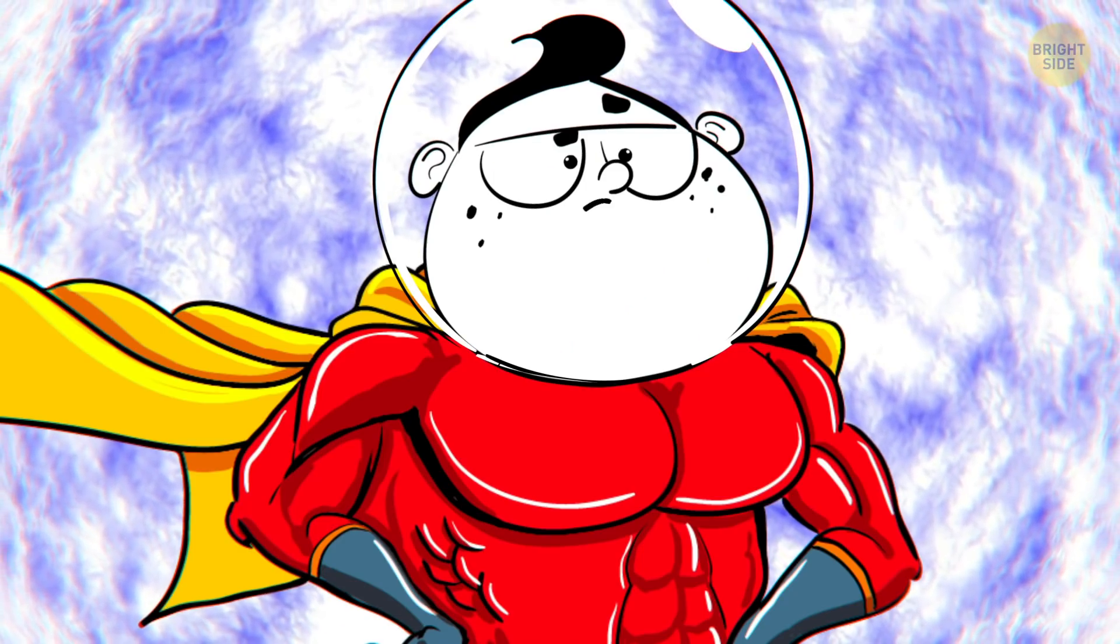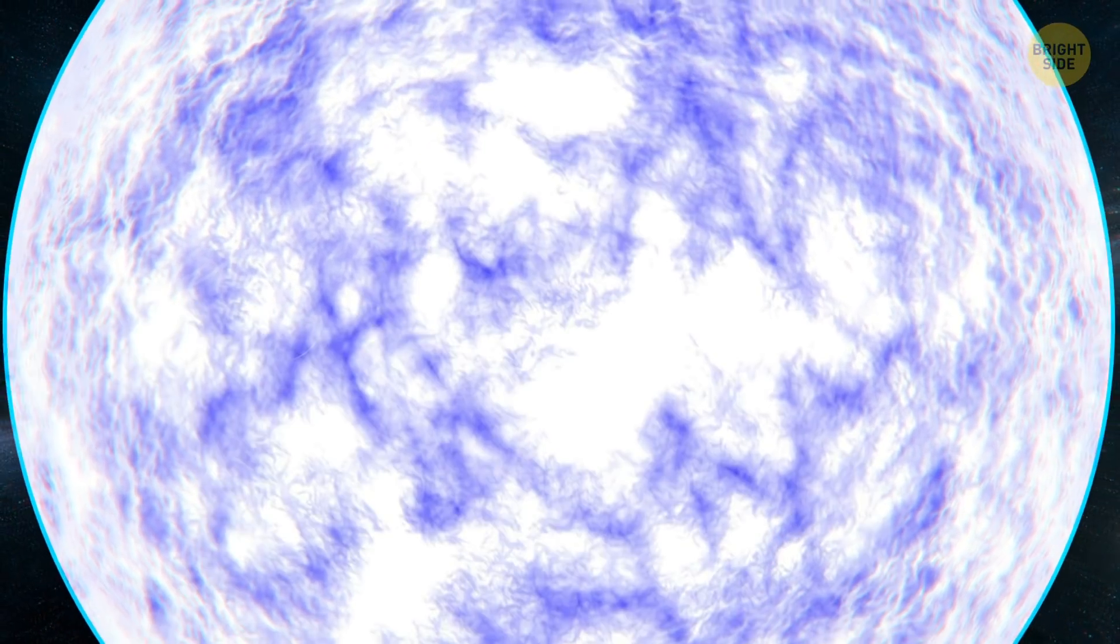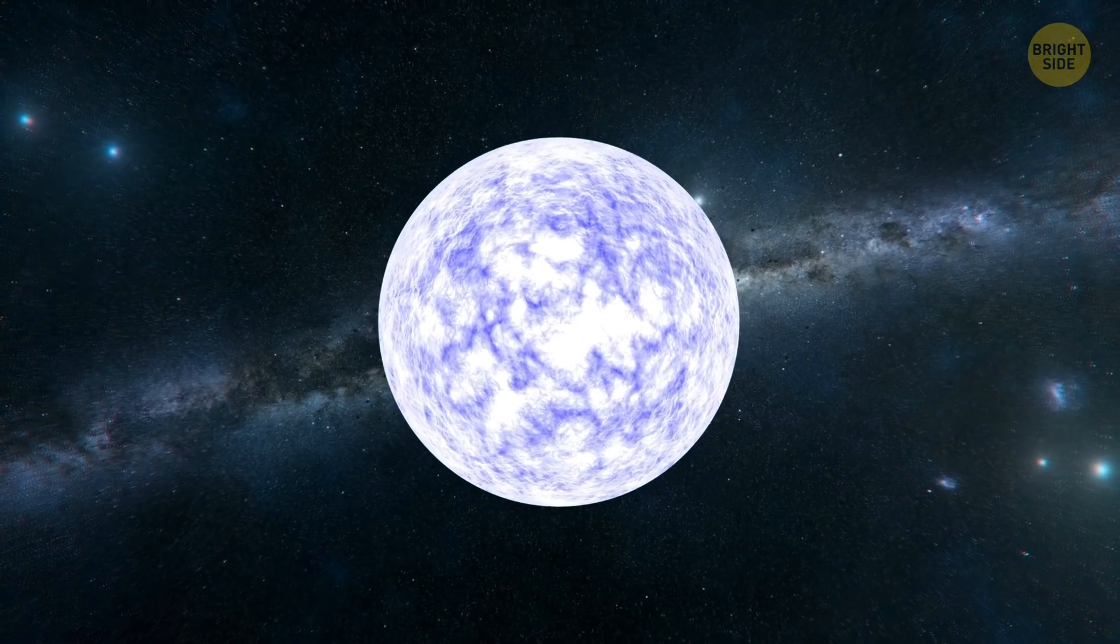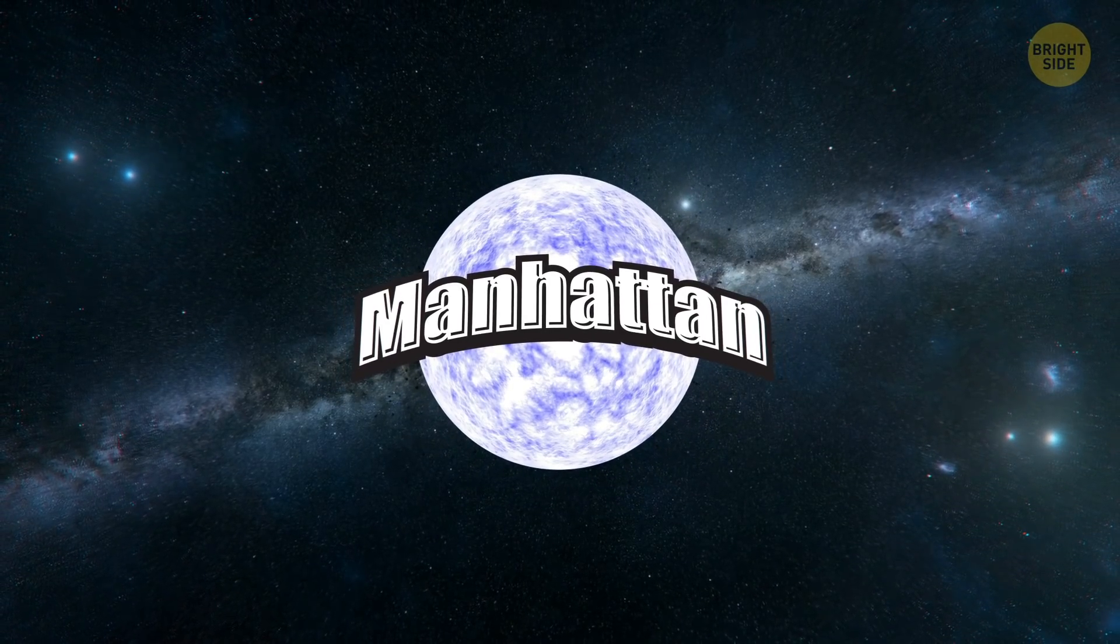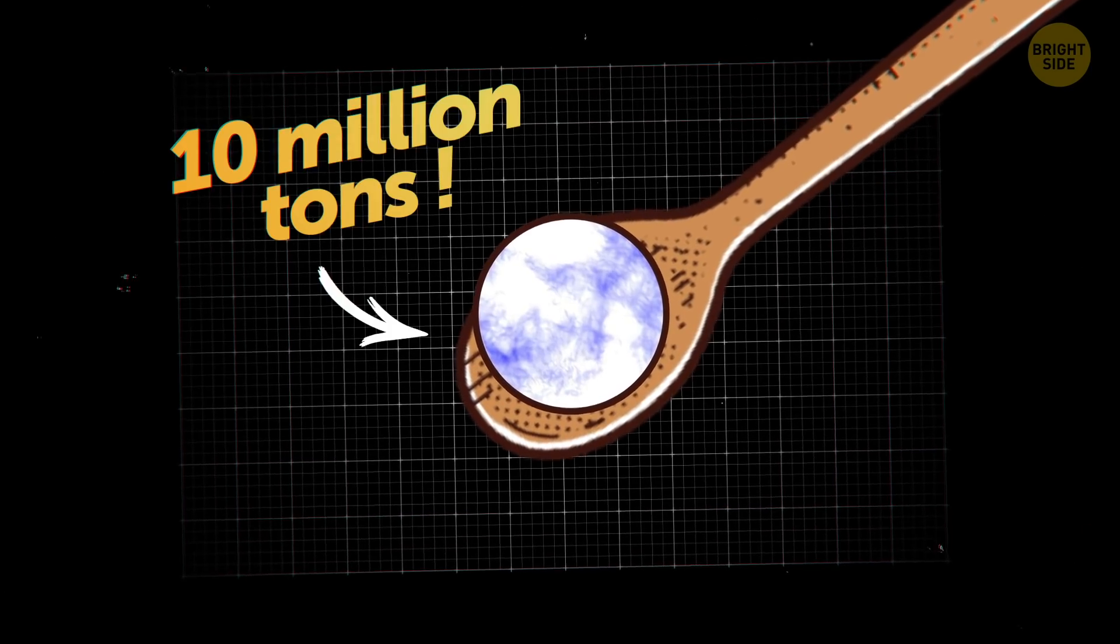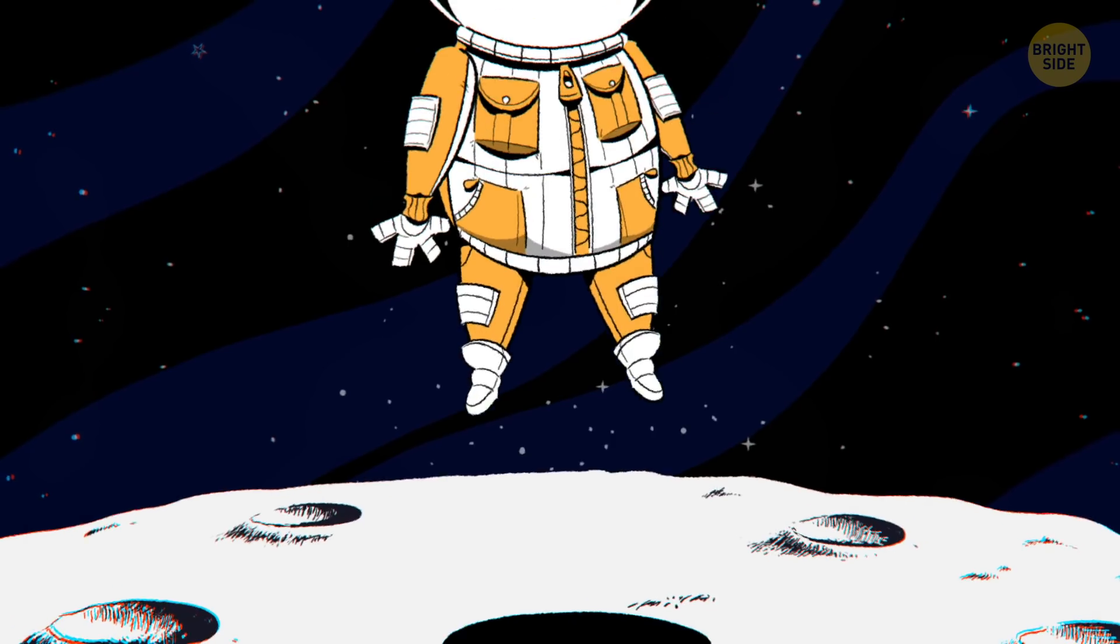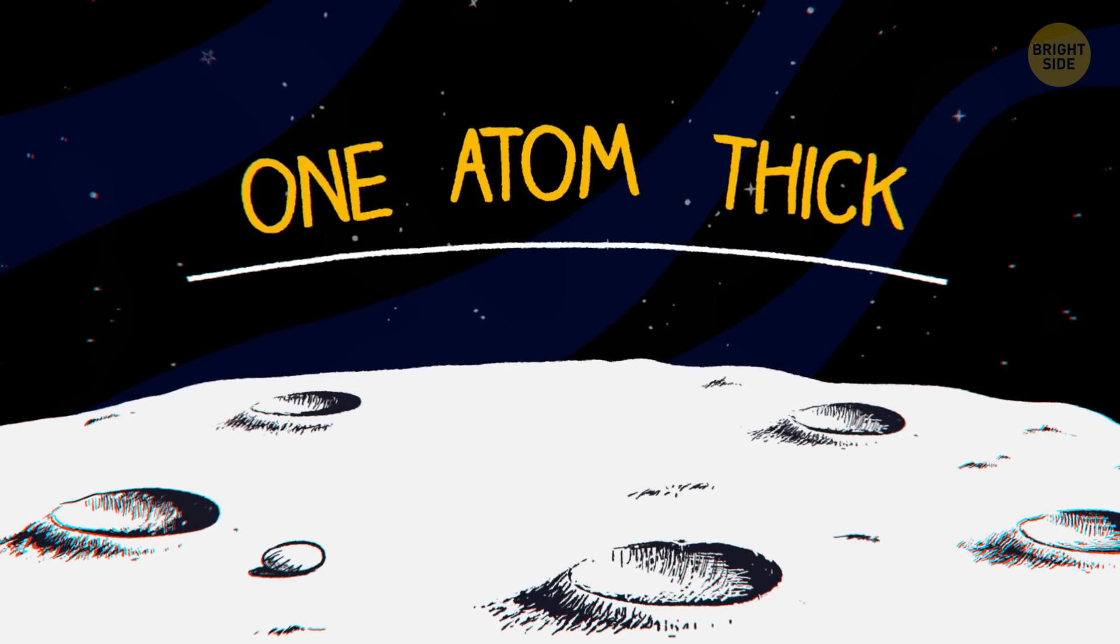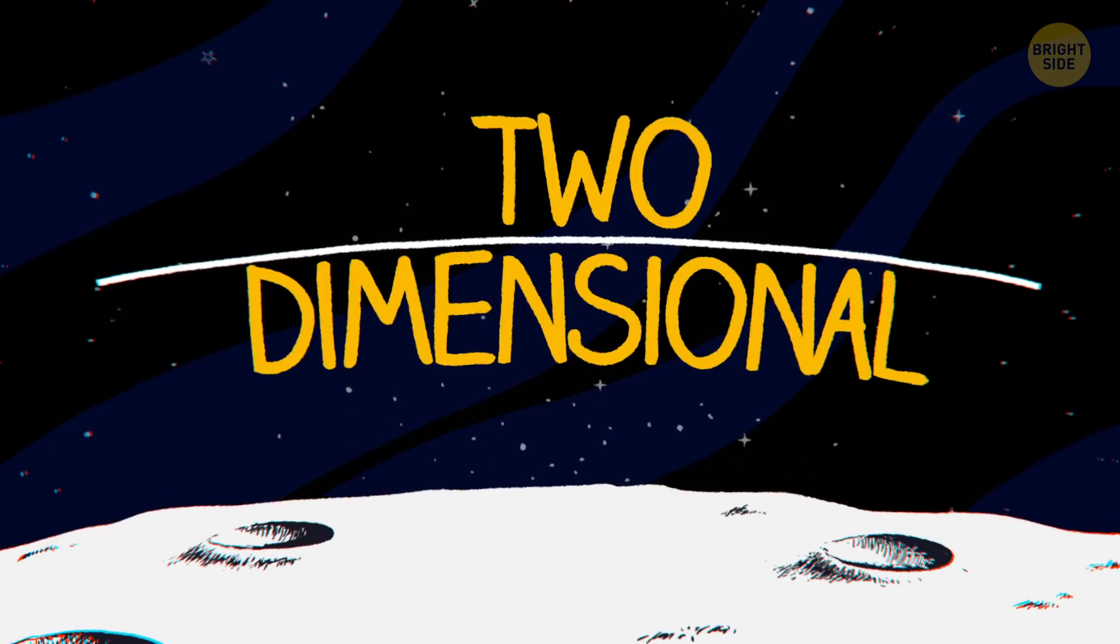You'd need Superman strength to lift weights on a neutron star. Imagine millions of Earths, packed up into a ball a little bigger than Manhattan. With that kind of density, a teaspoon of neutron star material weighs 10 million tons. If you get to the surface, your body will be instantly squished down and spread in a layer one atom thick. Congrats! You're now two-dimensional.